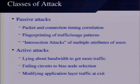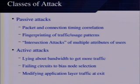Passive attacks: to secure the Tor network, we have to look at it from an attacker's point of view — understanding types of attacks, attacker motivation, and methods. First, classify attacks by what actions the attacker takes: are they just observing traffic, or actively modifying it? Under just observing traffic, we have packet and connection timing correlation — looking at when a connection starts, how many packets are involved, the pattern of those packets, and when it finishes.